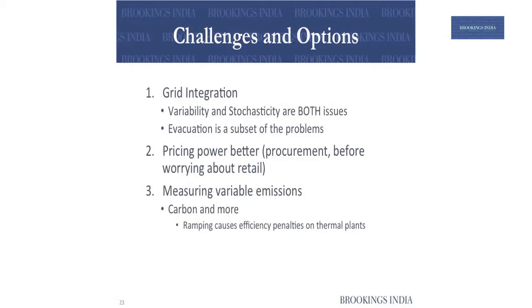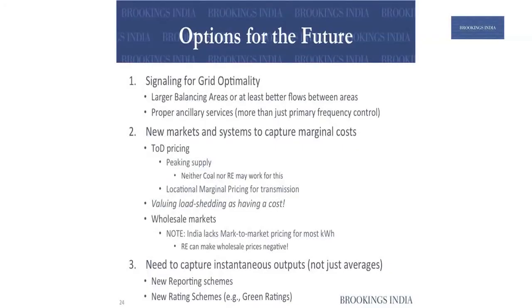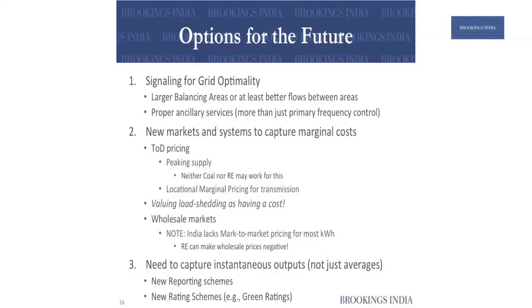The challenges are balancing coal, renewables, and demand — all three together sustainably. Grid integration, pricing power better, and also measuring carbon and other emissions — not just carbon, but even local air pollution. Some of the options discussed: can we do better signaling? Do we need larger balancing areas? Right now the state is the de facto balancing area. Maybe we need to think regionally or improve power flows within regions. Europe shares power better across countries than we are able to do across states — we have to fix that. We need new markets to capture the marginal cost of electricity, which could include time-of-day pricing. We need peakers — today there is no incentive for peakers. Tata Power, for example, actually procures peaking power, and that ultimately needs to get passed on to consumers.